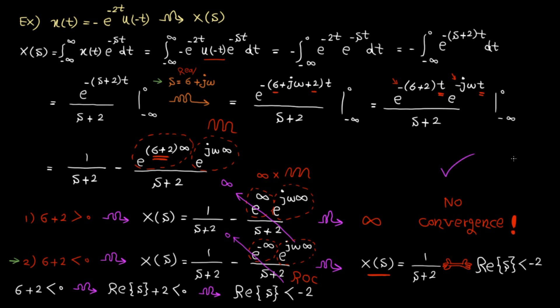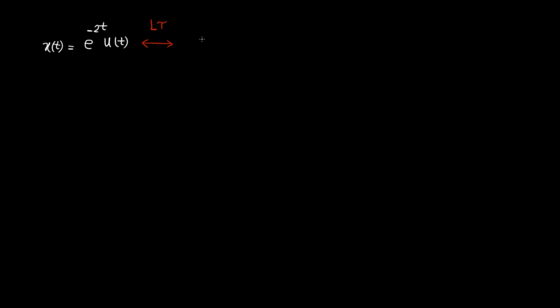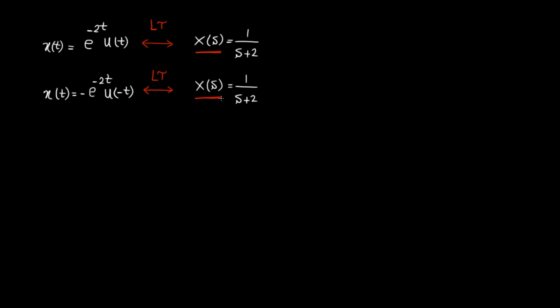Before I let you go, look carefully at the second and third examples. In the second example we had one function in the time domain and X(s) = 1/(s+2). In the third example, a different function in the time domain gave the same X(s). So we have the same X(s) but different x(t). The key difference is that the second expression is valid when the real part of s is greater than minus 2, but the third is valid when it is less than minus 2 — completely different regions of convergence. That's why Laplace transform without ROC is not complete; if you just give me X(s), I don't know which function you're talking about.